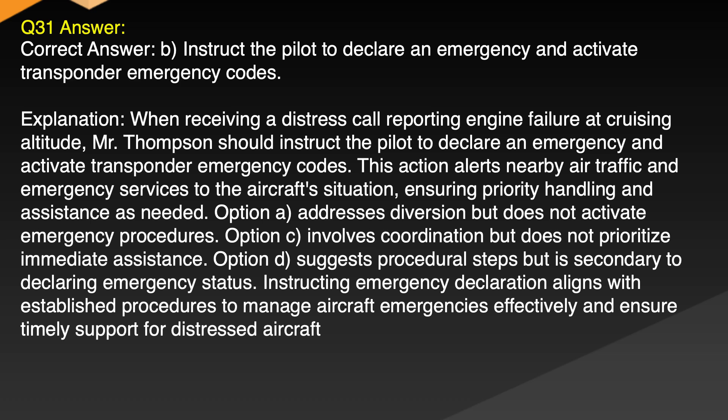Explanation: When receiving a distress call reporting engine failure at cruising altitude, Mr. Thompson should instruct the pilot to declare an emergency and activate transponder emergency codes. This action alerts nearby air traffic and emergency services to the aircraft's situation, ensuring priority handling and assistance as needed. Option A addresses diversion but does not activate emergency procedures. Option C involves coordination but does not prioritize immediate assistance. Option D suggests procedural steps but is secondary to declaring emergency status. Instructing emergency declaration aligns with established procedures to manage aircraft emergencies effectively and ensure timely support for distressed aircraft.